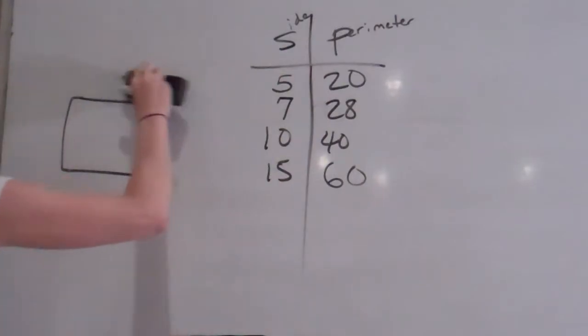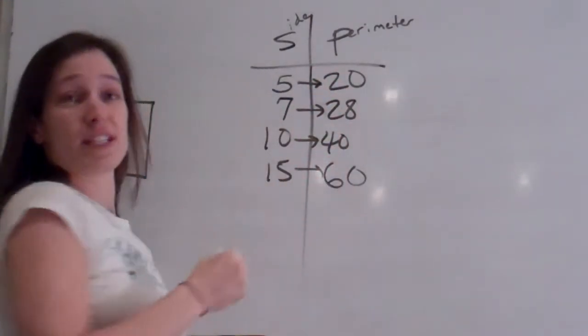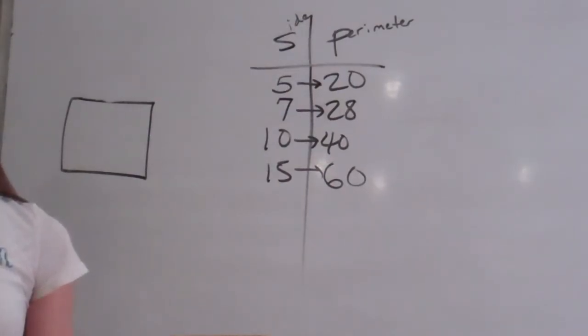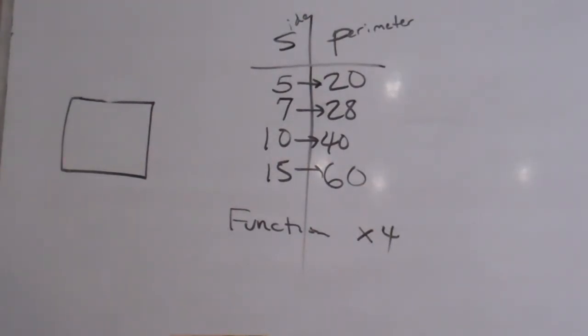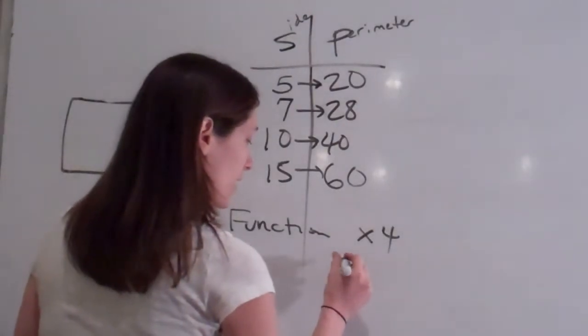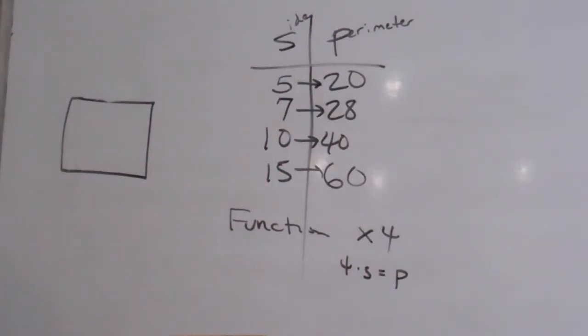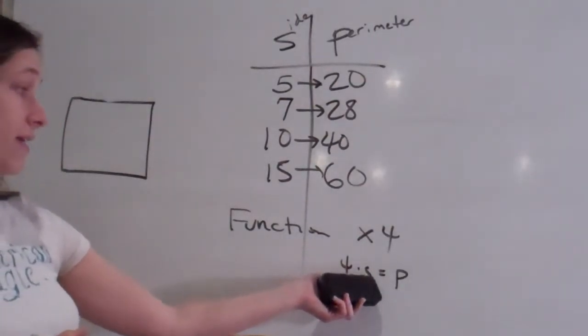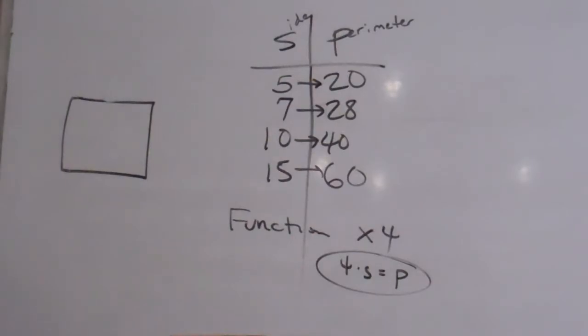Now, what this is called function is what you did to get this. What did we do? We multiplied. So that's the function. What do we multiply by? Four. So our function for this problem was times four. So if it was like a hexagon, you'd multiply by six. Yes. So what we say, our full function is 4 times S equals P. Does everybody understand what that means?